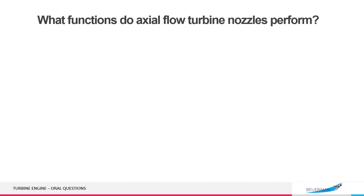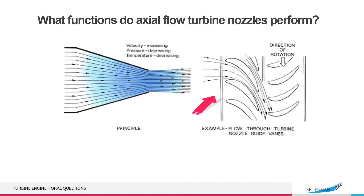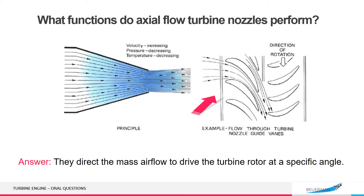What functions do axial flow turbine nozzles perform? They direct the mass airflow to drive the turbine rotor at a specific angle.